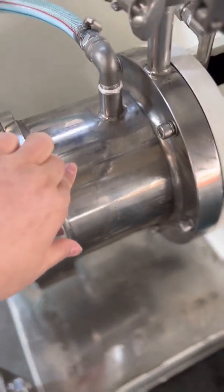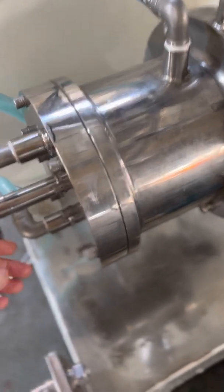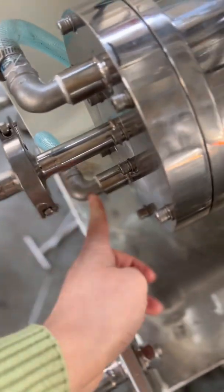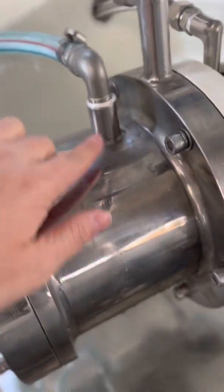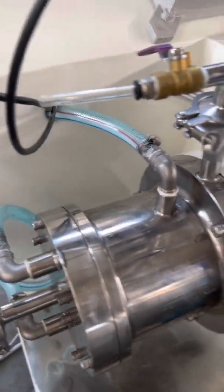The grinding chamber has a jacket for cooling. You can see the cooling water inlet and outlet, and the inlet and outlet for discharge and cooling water.